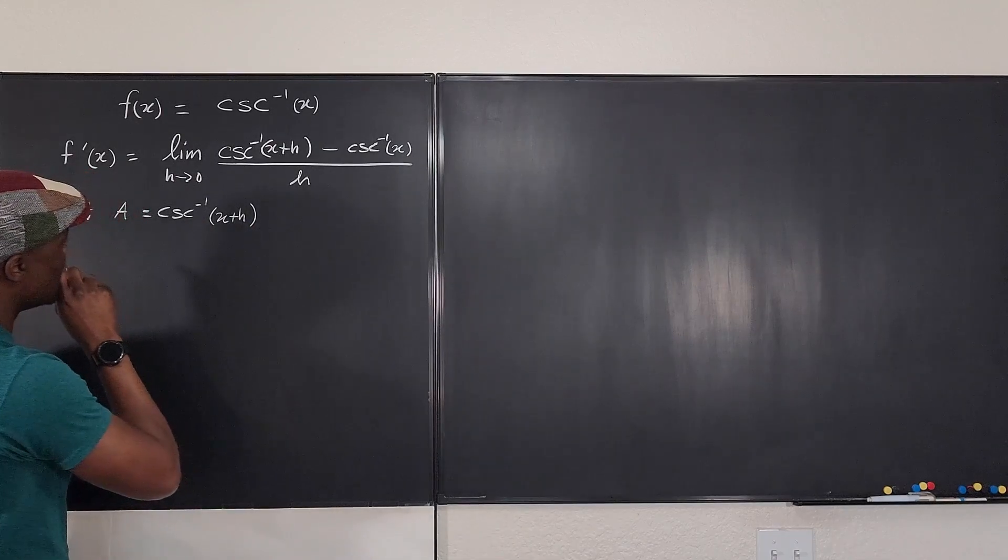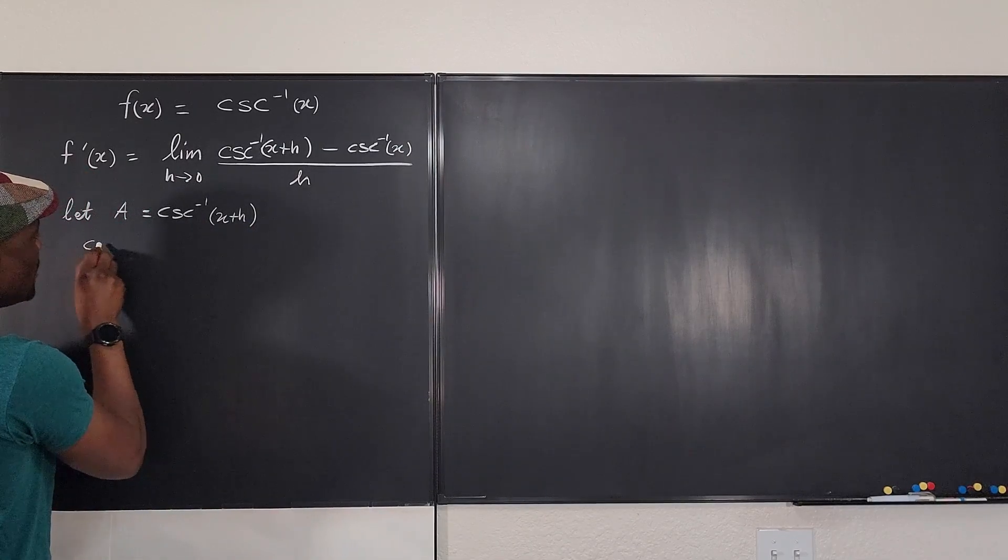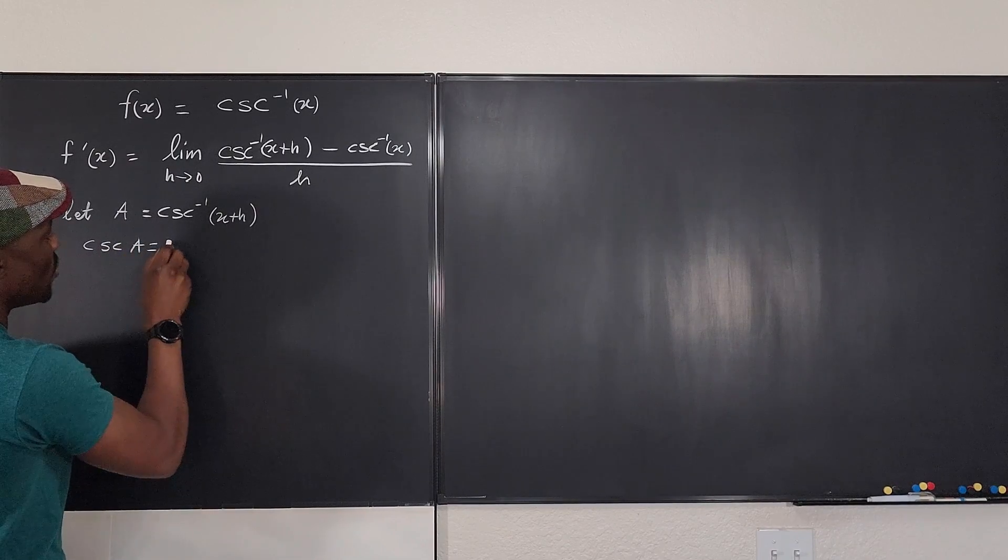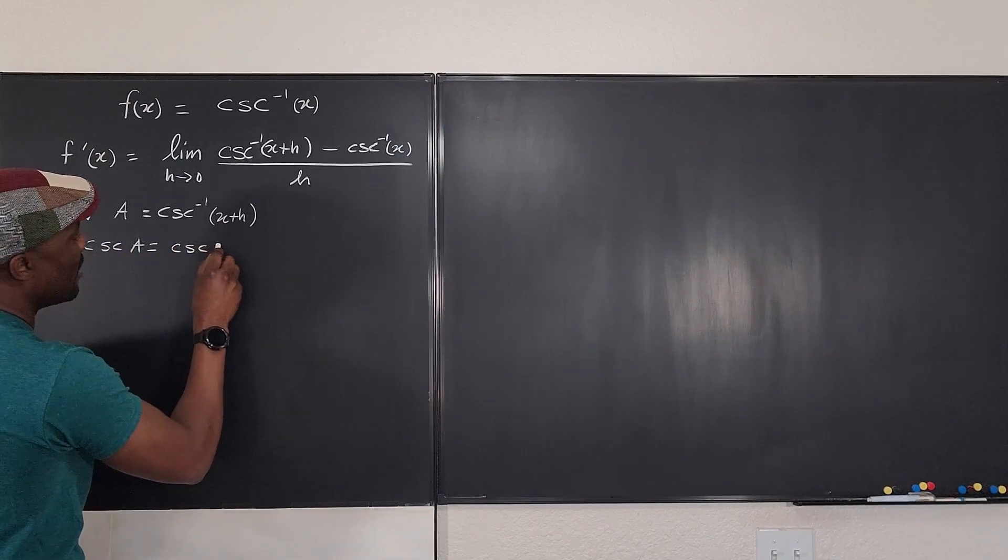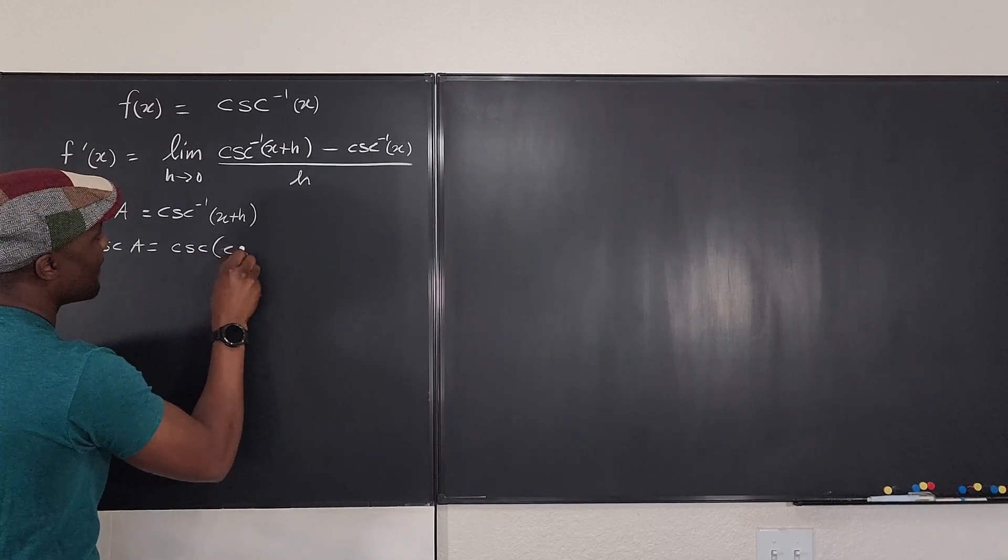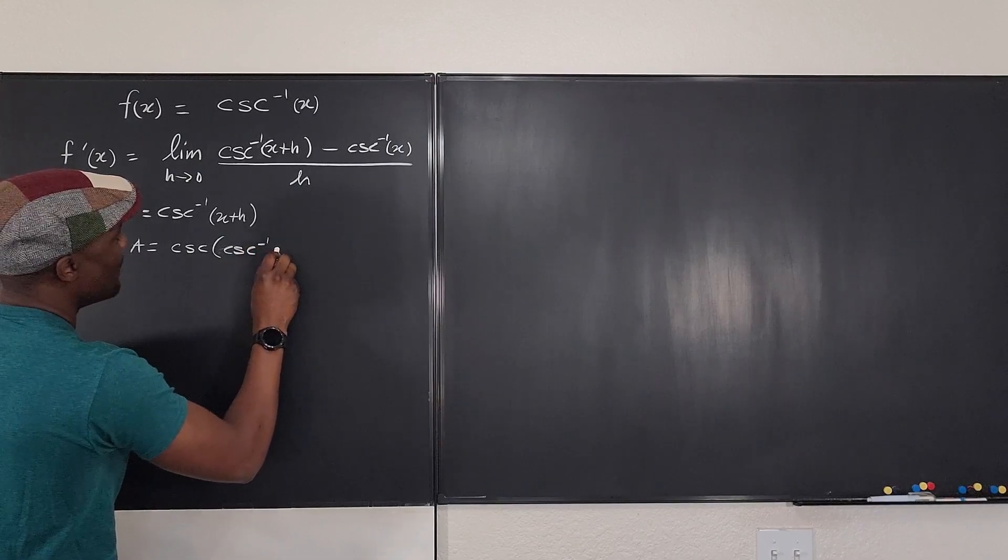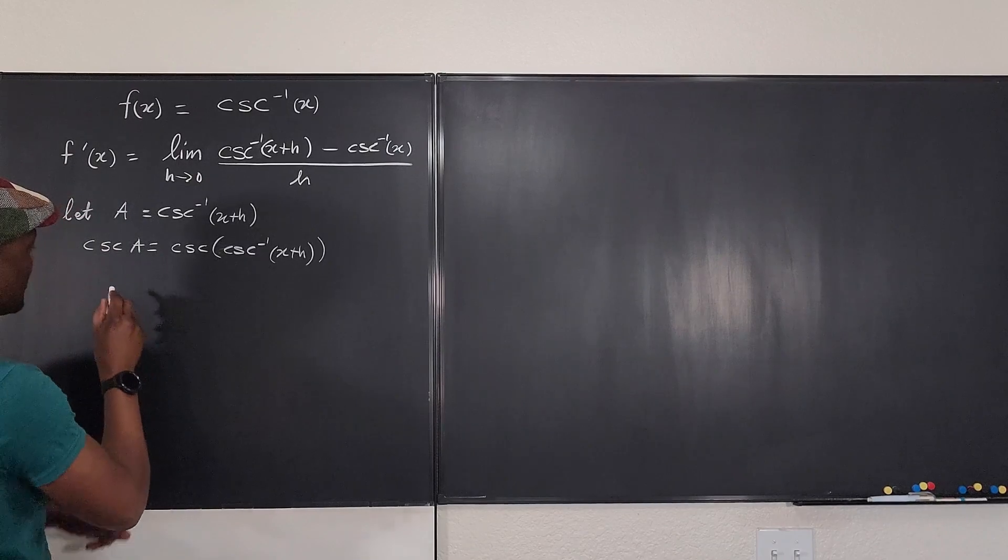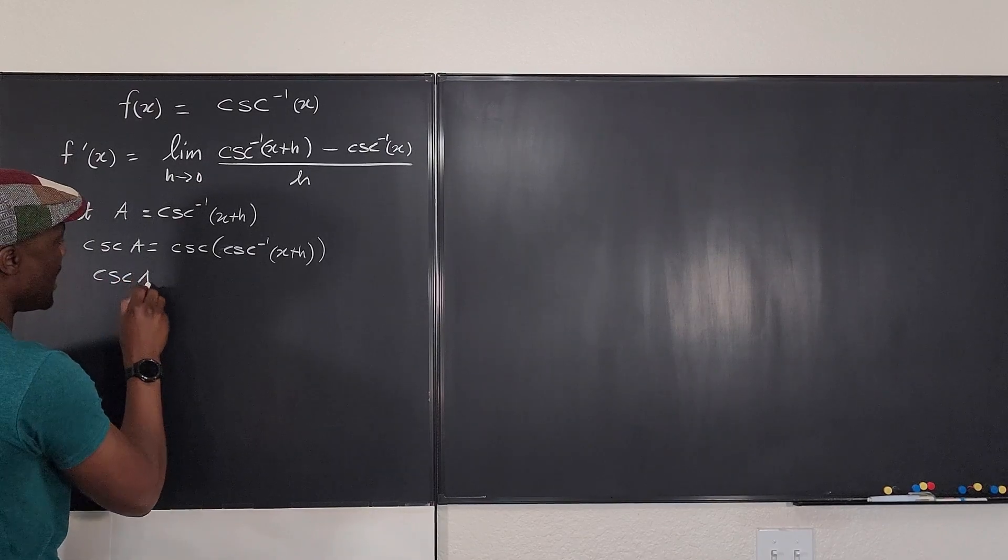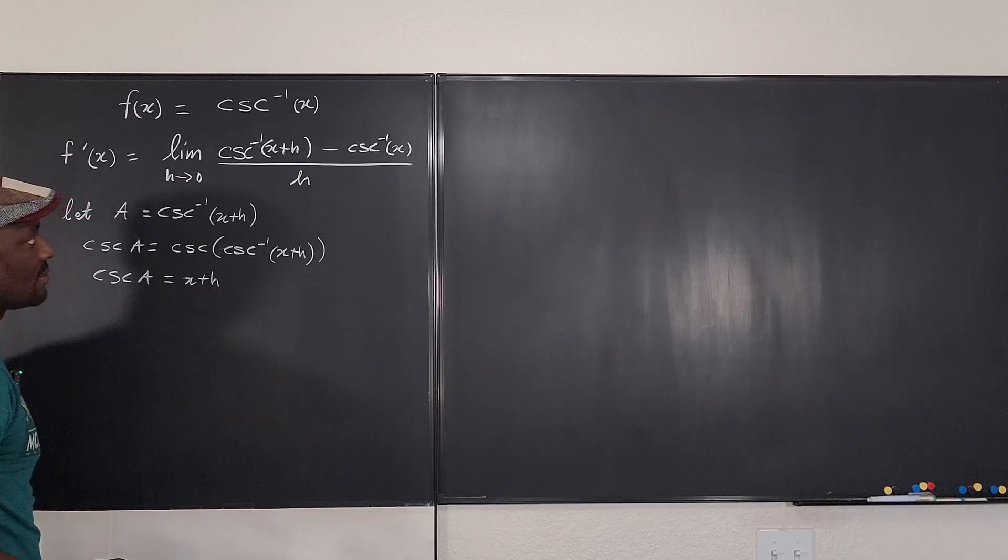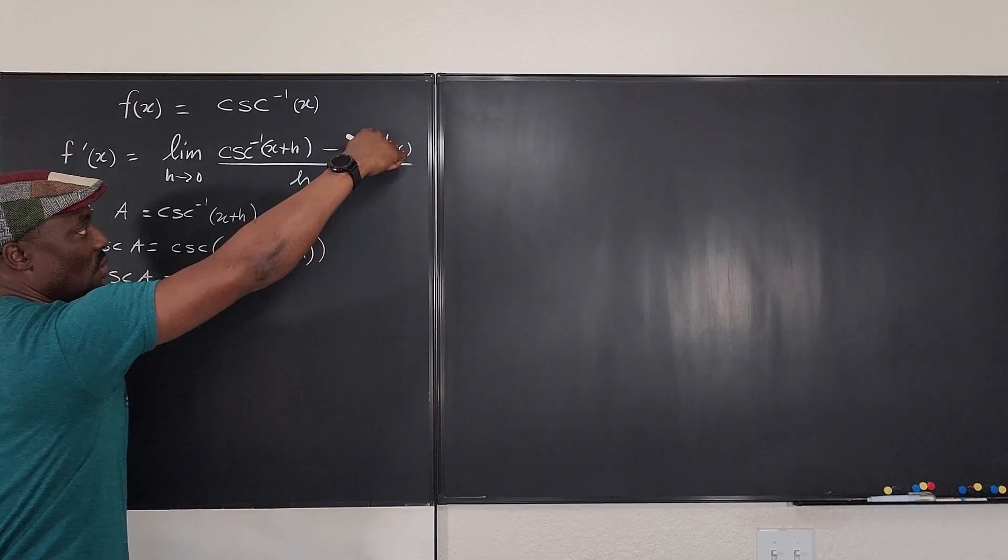And I'm going to say then that if I take the cosecant of a, then I'm also taking the cosecant of inverse cosecant of x plus h. So I'm taking the cosecant of both sides, and that tells me that cosecant of a is equal to x plus h. Nice. And I can replace this also.